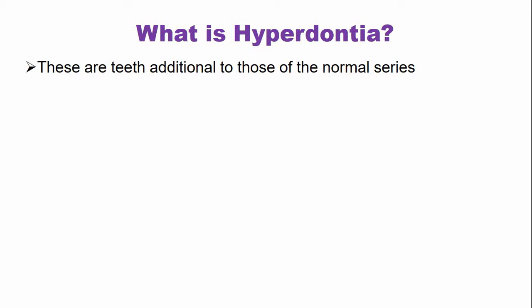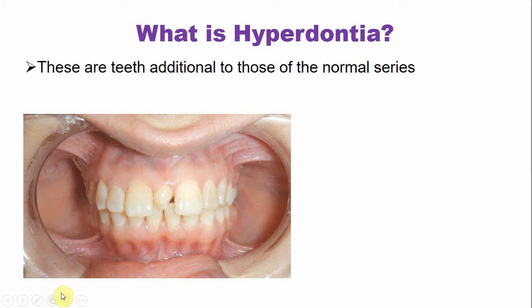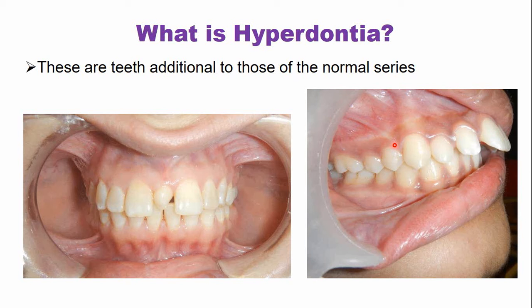In hyperdontia, there are teeth in addition to those of the normal series. In this clinical picture showing the maxillary and mandibular teeth, in between these two maxillary central incisors there is an additional tooth. This condition is known as hyperdontia. In another picture showing the lateral aspect of the maxillary and mandibular dental arch, we can see the central incisor, the lateral incisor, the canine, and an additional lateral incisor — all of these conditions are referred to as hyperdontia.